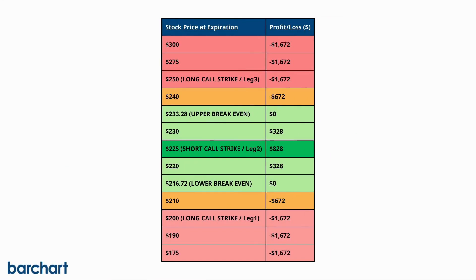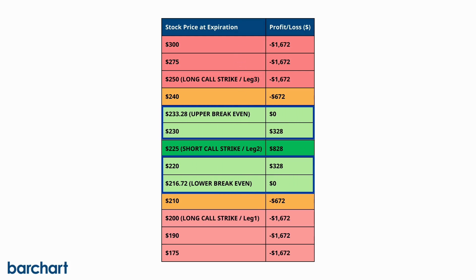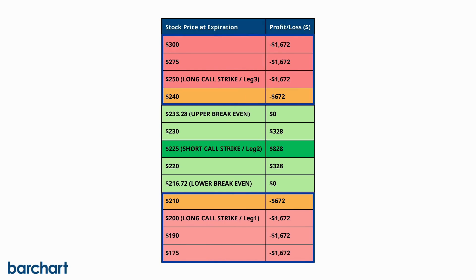Here's a profit and loss table for different prices to give you a better idea of the potential results on this trade. As you can see, the maximum profit is only achieved at one price point — if Apple stock trades at exactly $225 at expiration. The trade will also result in a profit as long as the stock trades between the breakeven points by expiration, and a loss when it breaches the upper or lower breakeven points at expiration.